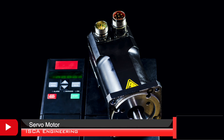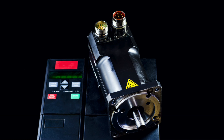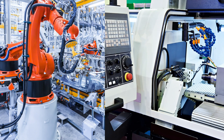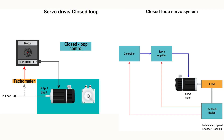Servo motors are controlled by sending them a pulse of variable width. The motor is controlled with an electric signal, either analog or digital, which determines the amount of movement. These motors are used in applications requiring precise position control such as robotics, CNC machinery, camera focus, antenna positioning, and many more. Servo motors use closed-loop systems, where position feedback is used to control motion and final position. The components for the system are a motor, drive (also referred to as an amplifier), and a feedback mechanism that can include an encoder or resolver. These motors are available in both AC and DC. DC servo motors provide very accurate and fast response to start or stop command signals due to low armature inductive reactance. AC servo motors have high accuracy and can be controlled precisely as required for their applications.